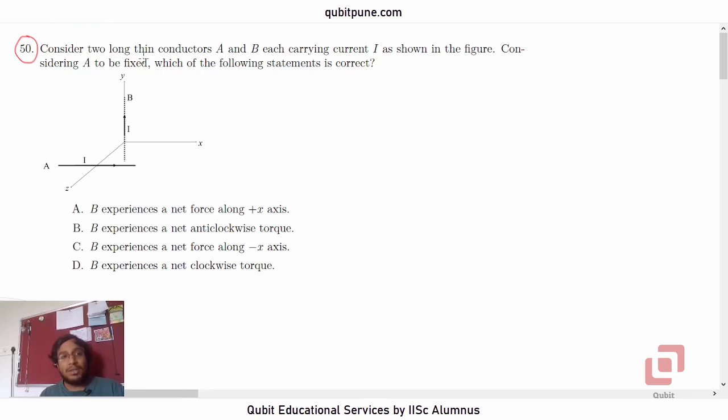Let's read the statement first. Consider two long thin conductors A and B each carrying current I as shown in the figure. Considering conductor A to be fixed, which of the following statements is correct? B experiences a net force along positive x-axis, a net anti-clockwise torque, a net force along negative x-axis, and finally a net clockwise torque.